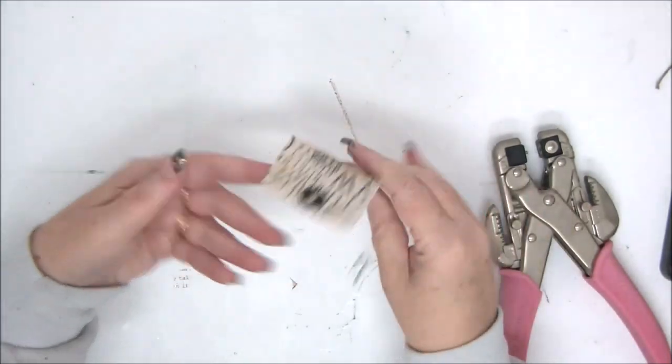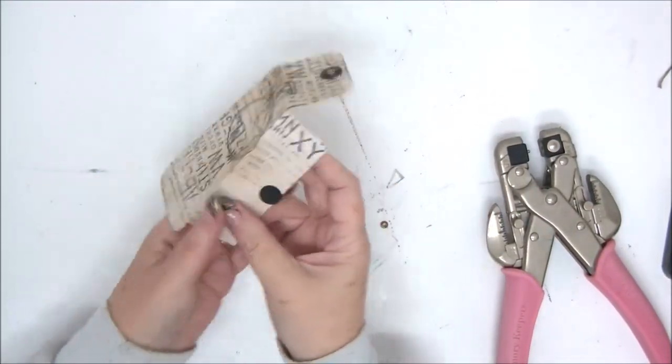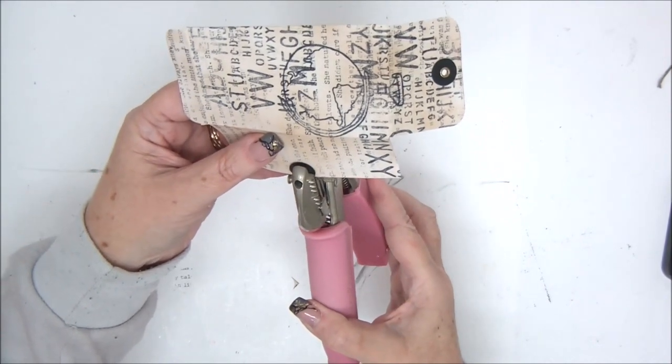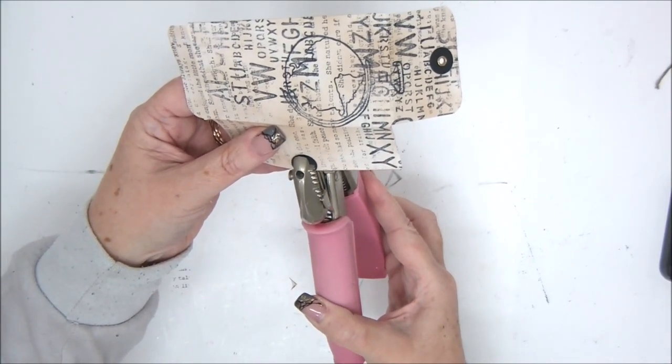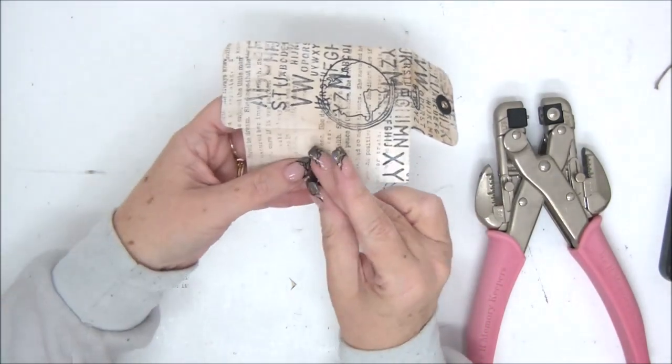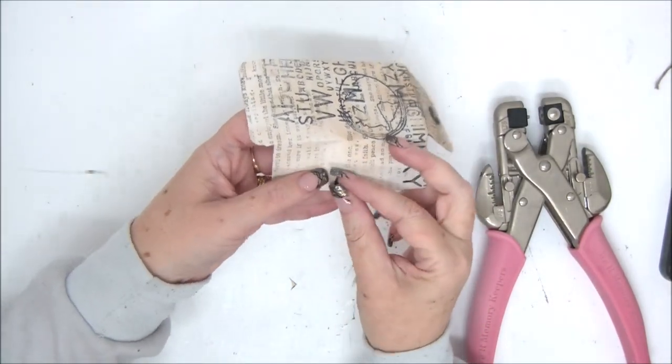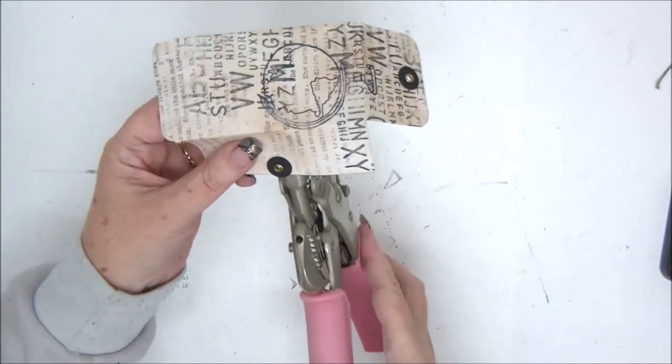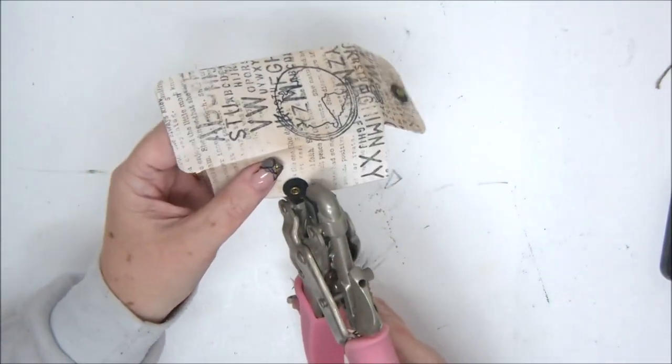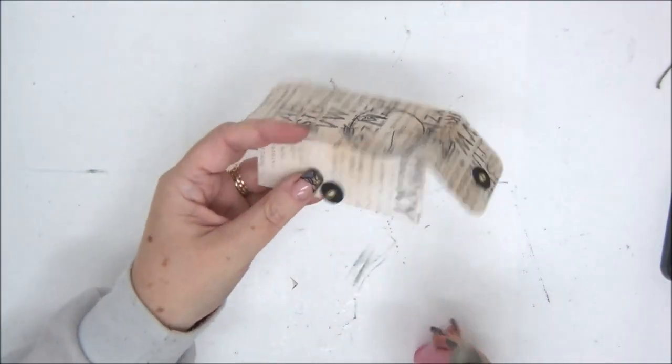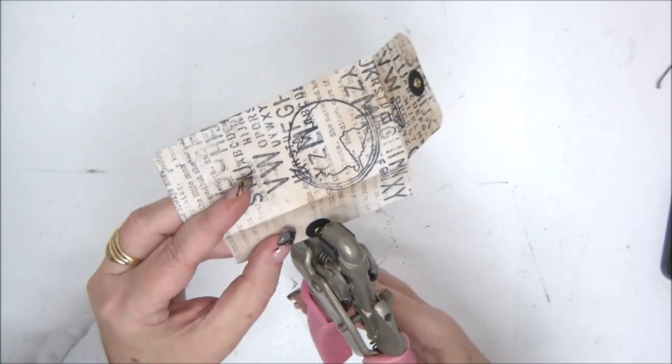I'm using metal colors because they fit the theme. And this is why you need to do this before you close the envelope with glue, because this huge tool will not fit inside the envelope when it's closed.